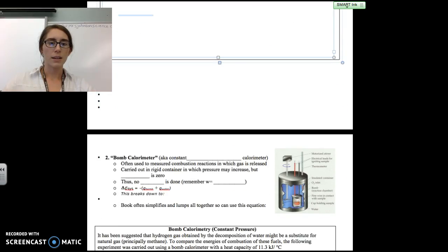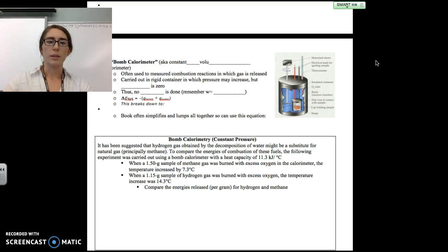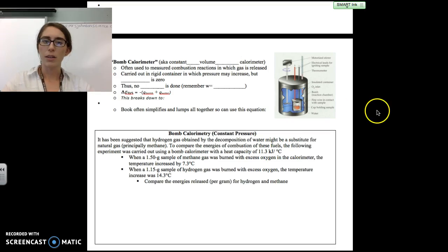Now let's talk about the bomb calorimeter. This is a constant volume calorimeter. If we look at this picture, this is the basic bomb calorimeter. These are often used for combustion reactions. This little container in the center is called the bomb - it's a rigid metal container surrounded by water, which is held in by another rigid metal container.